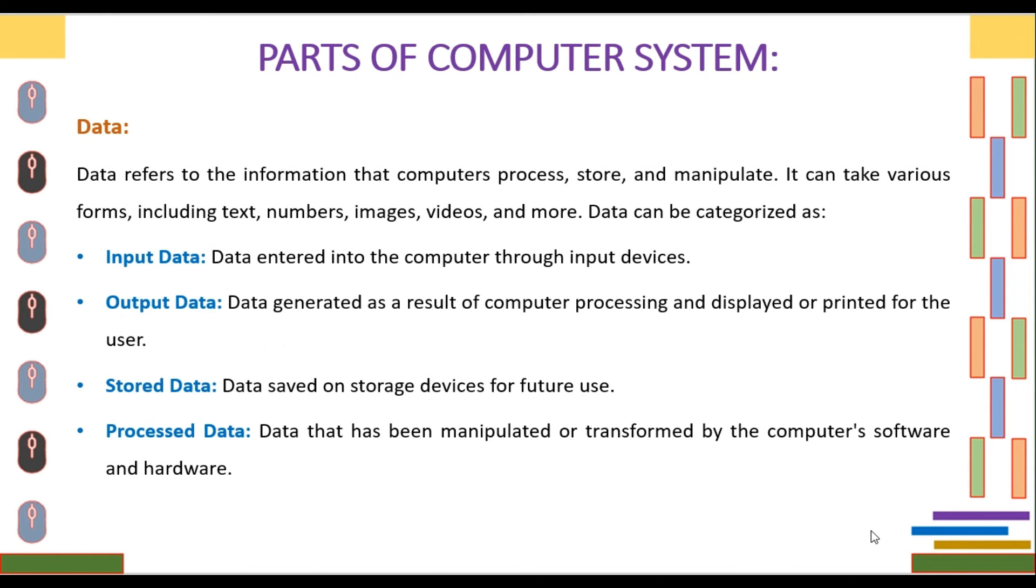Next part of computer system is Data. Data refers to the information that computers process, store, and manipulate. It can take various forms, including text, numbers, images, videos, and more.